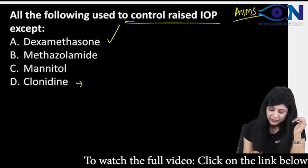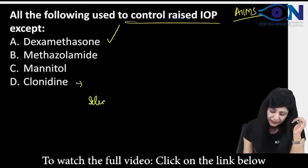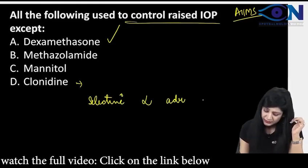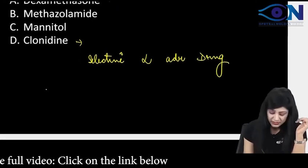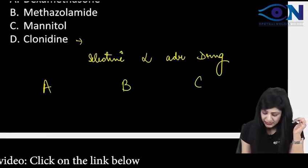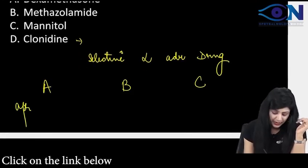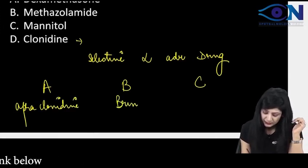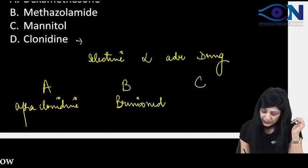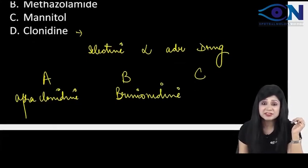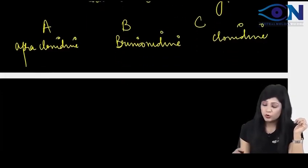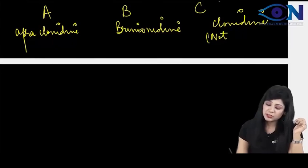Clonidine is actually a selective alpha adrenergic drug. If you remember, we discussed it as A, B, and C. We have apraclonidine, then we have brimonidine, and then we have C for clonidine. I told you that it is not used clinically, and that is the reason why you say the answer is clonidine.